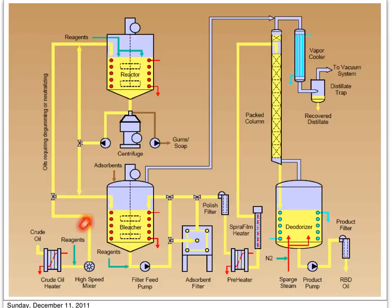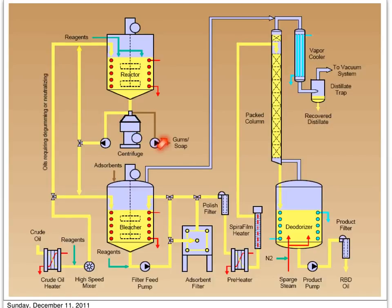Then the oil will go through the next step. In a chemical refining process, the next step is neutralization, where sodium hydroxide or alkali is added and reacts with the free fatty acids. Soap and gums are formed here, so we need a centrifuge to separate the oil from the gums or soap.